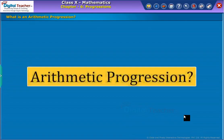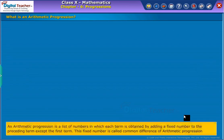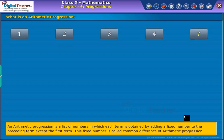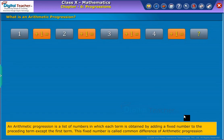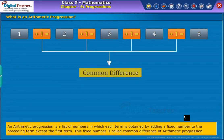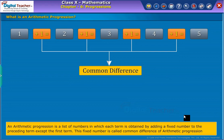What is an arithmetic progression? An arithmetic progression is a list of numbers in which each term is obtained by adding a fixed number to the preceding term, except the first term. This fixed number is called the common difference of the arithmetic progression.